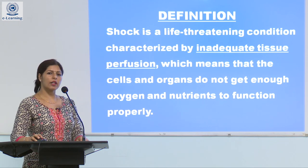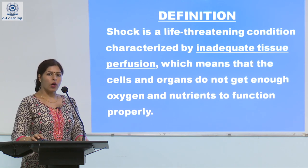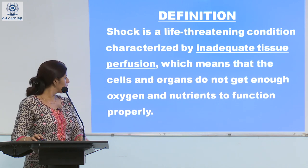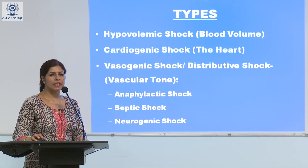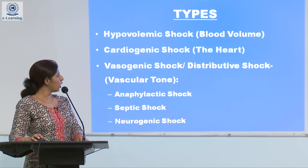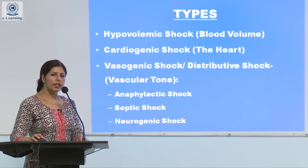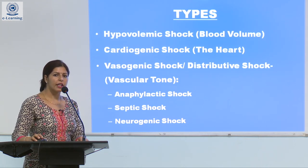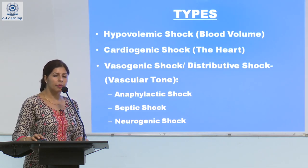Shock is a life-threatening condition characterized by inadequate tissue perfusion, which means that the cells and organs do not get enough blood supply, oxygen supply, and nutrients to function properly. There are three factors which decide adequate cardiac output: the blood volume, the heart, and the vascular tone. When these three factors work in coordination, the cardiac output is good and the cells keep receiving enough blood and oxygen. But if any of these factors is altered, the person may go into shock.